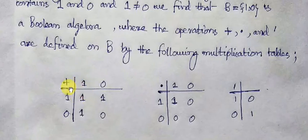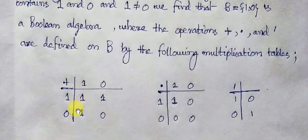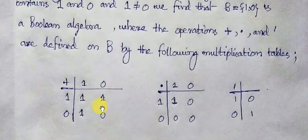If we add 1 with the 0 element, we shall have 1. If we add 0 with 1, we shall have 1. If we add 0 with 0, we shall have 0.